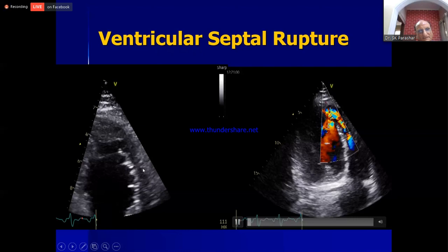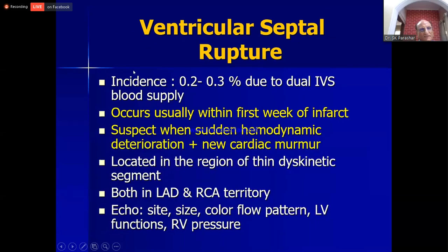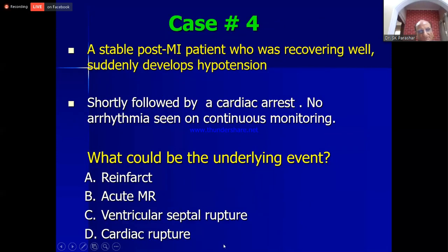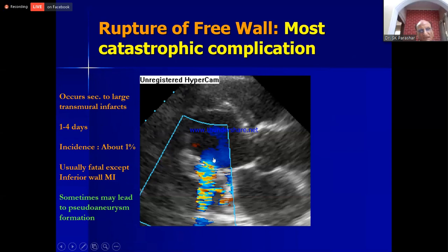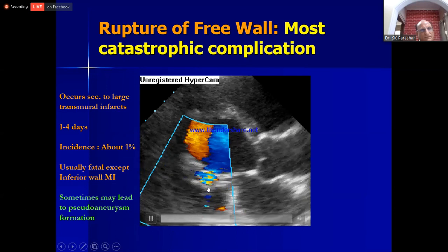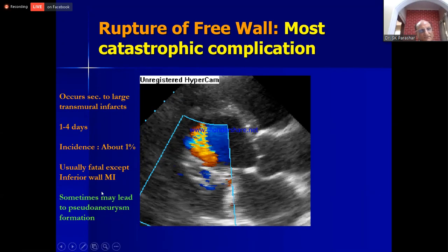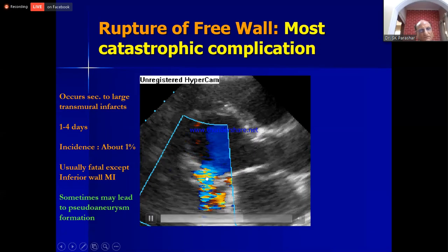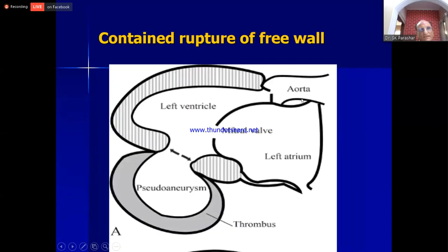Another case: a stable post-MI patient suddenly developed hypotension followed by cardiac arrest with no arrhythmia. Echo showed a rupture of the inferior wall with blood going from the LV into a pseudo-aneurysm. Free wall rupture occurs due to large transmural infarcts and is usually fatal; it can lead to a pseudo-aneurysm, sometimes in inferior MI. These patients typically go into sudden cardiac arrest very quickly.